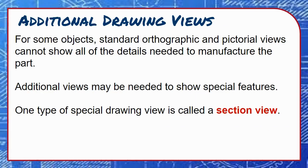For some objects, standard orthographic and pictorial views can't show all of the details needed to manufacture the part. Additional views might be needed to show special features. One of these special drawing views is called a section view.